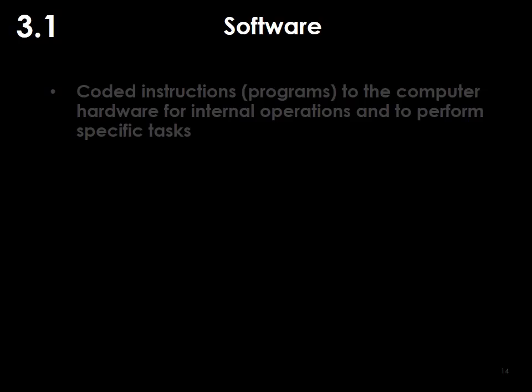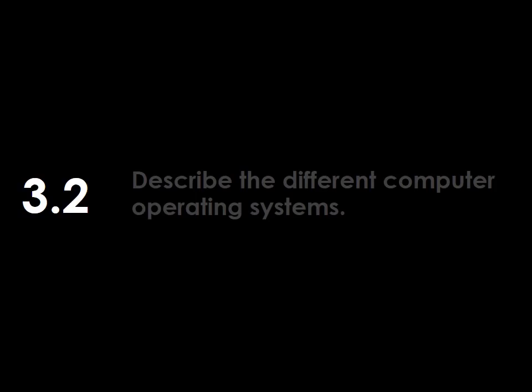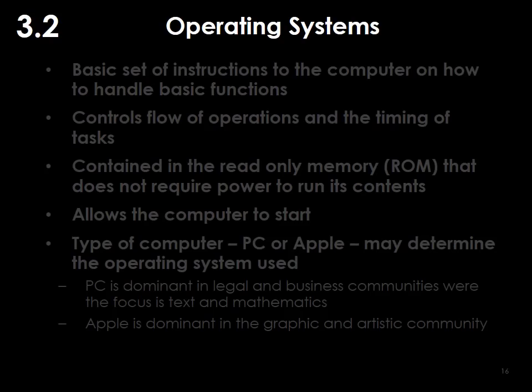Software consists of coded instructions to the computer hardware for internal operations and to perform specific tasks. I prefer to call software thoughtware because the programmers thought through what the computer should do when you press a particular key — the program awaits your instructions, but the computer is not thinking; it is the thought of the programmer. The operating systems are the basic set of instructions to the computer on how to handle basic functions, controlling flow of operations and timing of tasks.